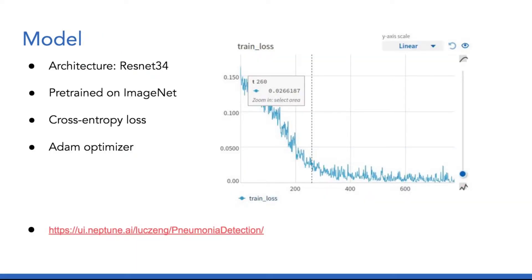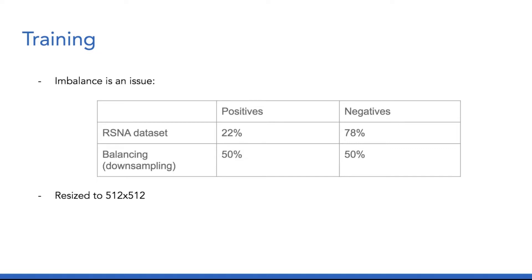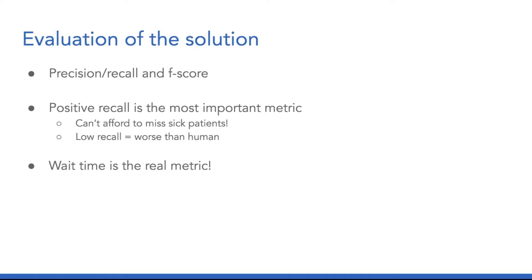For the model, we decided to use a ResNet-34, pre-trained on ImageNet, with cross-entropy loss and an ADAM optimizer. Here is one example of the training loss for one training run, and here is the link for the Neptune experiments. For training, we had one issue, which was the imbalance of the dataset — we have almost 80% negatives. We applied a balancing scheme by downsampling the negatives to have as many positives as negatives. We also resized the images to 512 resolution with no visual loss of information. To evaluate the model, we decided to use precision, recall, and F-score. However, we want to stress that positive recall is the most important metric because we do not want to miss any sick patients. Another comment is that wait time is the real metric, but we cannot evaluate this for the sake of this MVP.